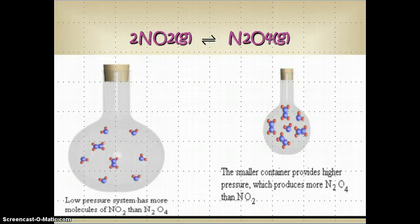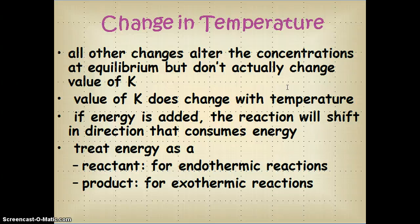Now let's talk about how a change in temperature is going to affect equilibrium. All the changes we've talked about up until now only alter the concentrations of the reactants and products at equilibrium, but they don't actually change K. Changing the temperature, however, does change K. So if energy is added, the reaction will shift in the direction that consumes the energy or gets rid of that extra energy that was added. The best way to deal with temperature is to treat it as a reactant or product. For endothermic reactions, energy is a reactant because we are adding energy; for exothermic reactions, energy will show up as a product.